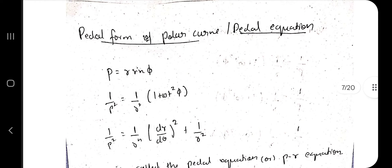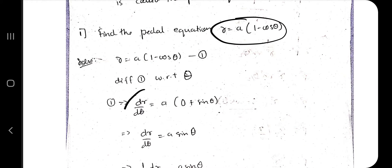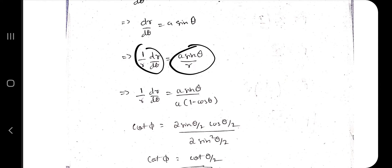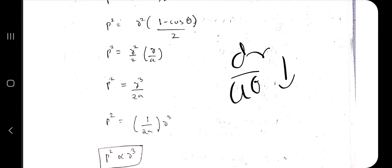Moving to the pedal equation of a polar curve: p = r·sin(φ). Take the inverse and square it to obtain the pedal equation (also called the p-r equation). To solve: given r, find dr/dθ, take 1/r·(dr/dθ) as cot(φ), find φ (which comes out as θ/2 in this case), substitute into the pedal equation, and simplify. Just remember the formula and the simplification steps.